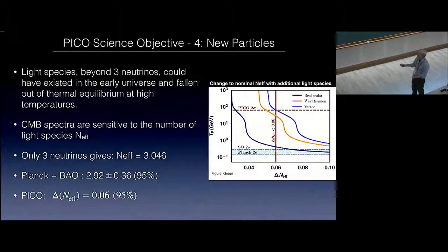The Planck constraints on various types of particles as a function of the decoupling temperature. For a vector particle, for example, the improvement is about a factor of 400 in the decoupling. This is SO, Simons Observatory, two sigma, and this is the QCD phase transition.